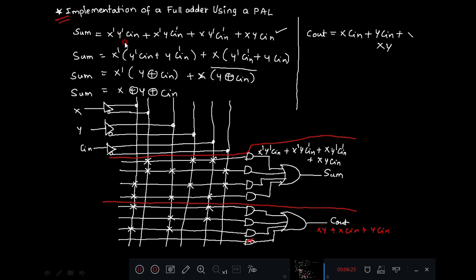Which are the sum of product terms that we need to calculate? These: X Y CIN, X dash Y dash CIN, X dash Y CIN dash, X Y dash CIN dash, X Y CIN. These four product terms, and X CIN, Y CIN and X Y. So total seven product terms need to be computed by AND array, and then two functions need to be implemented: one for SUM and another for COUT.